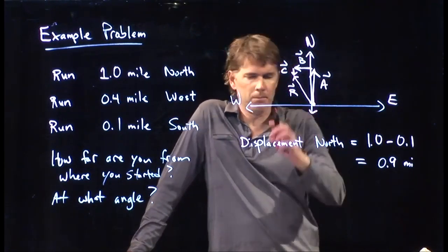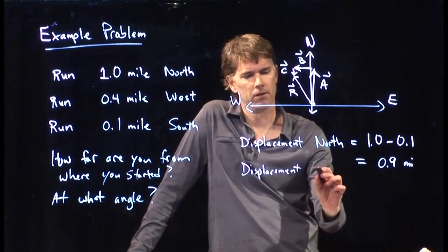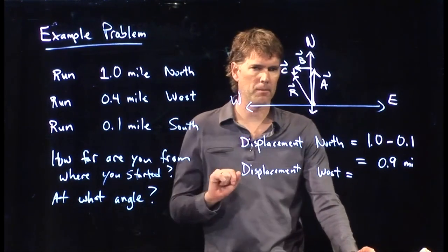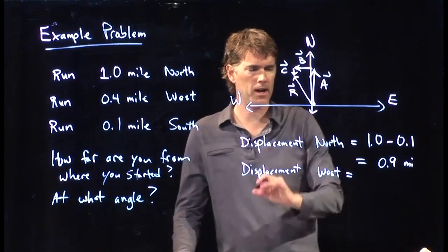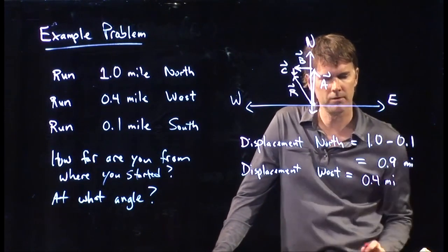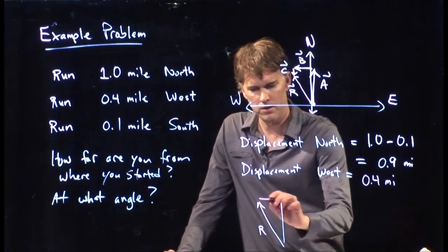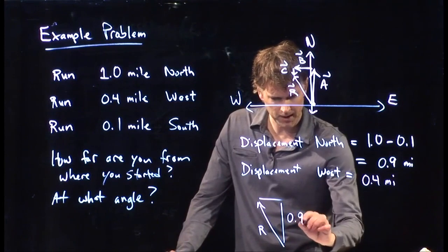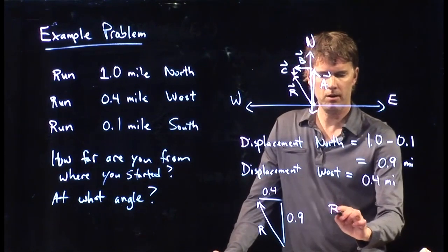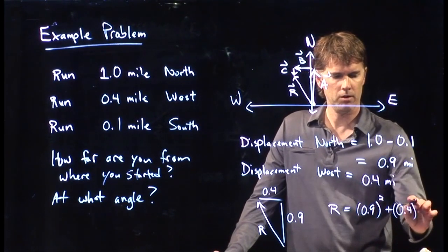It looks like we've also ended up to the west. How far west are we? The displacement west is only that middle step — the others were straight up and down — so the displacement west is 0.4 miles. Now you know the sides of the triangle for R: the vertical side is 0.9 and the horizontal side is 0.4, so you can calculate R as the square root of 0.9 squared plus 0.4 squared.